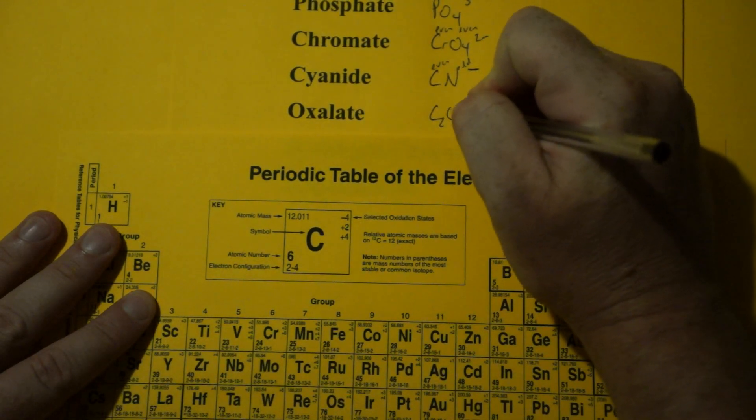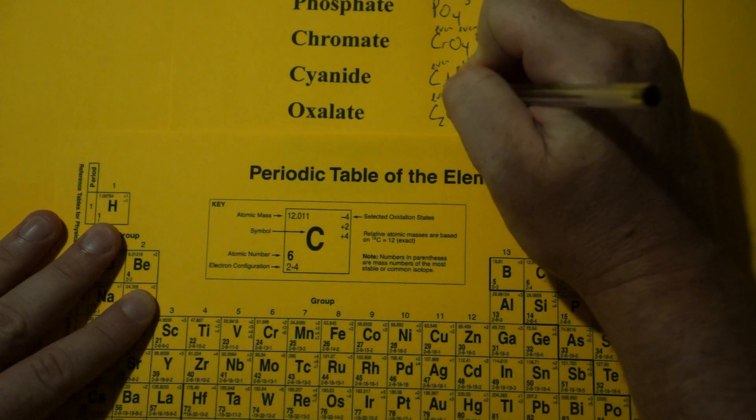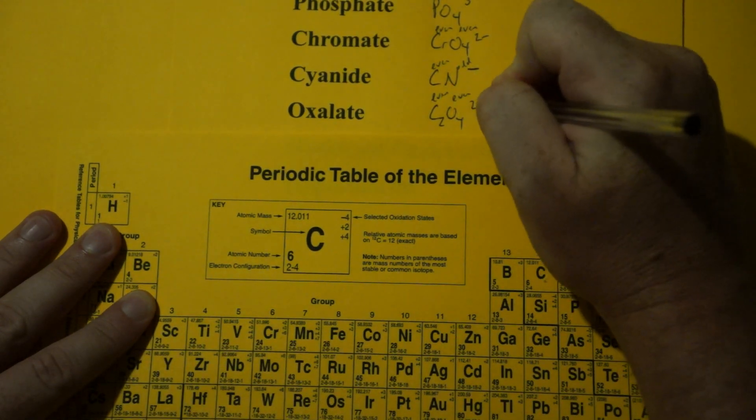Oxalate. C2O4. Carbon's in an even group. Oxygen is in an even group. Two evens make it even. 2 minus.